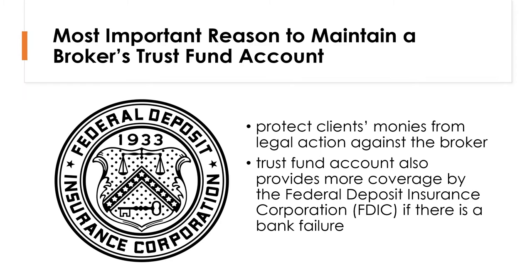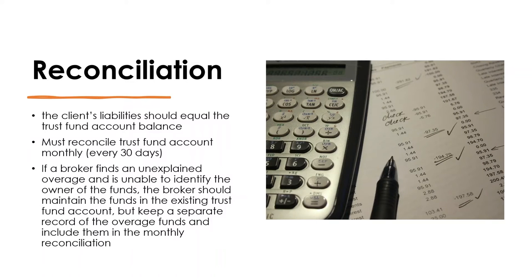Regarding reconciliation: the clients' liabilities should equal the trust fund account balance. What's in the account should equal what needs to be paid out to clients. To ensure they're equal, you must reconcile the account every 30 days — monthly reconciliation is required by law. If the broker finds an unexplained overage and cannot identify the owner of those funds, the broker should maintain the funds in the existing trust fund account and keep a separate record of the overage.